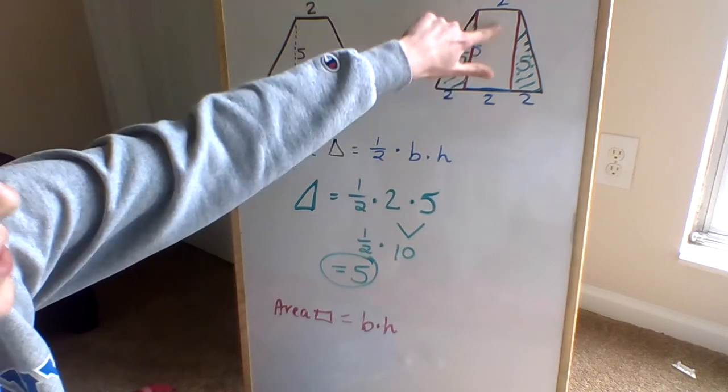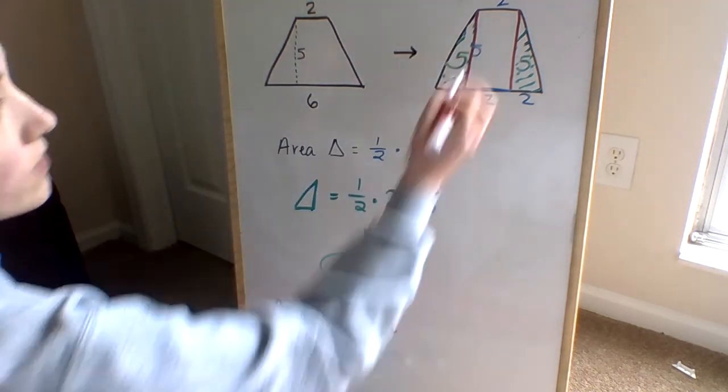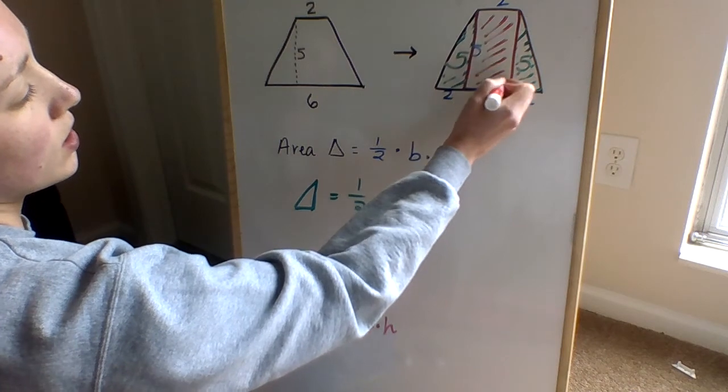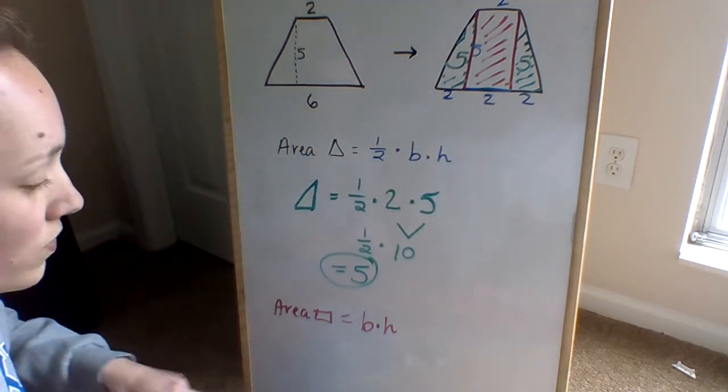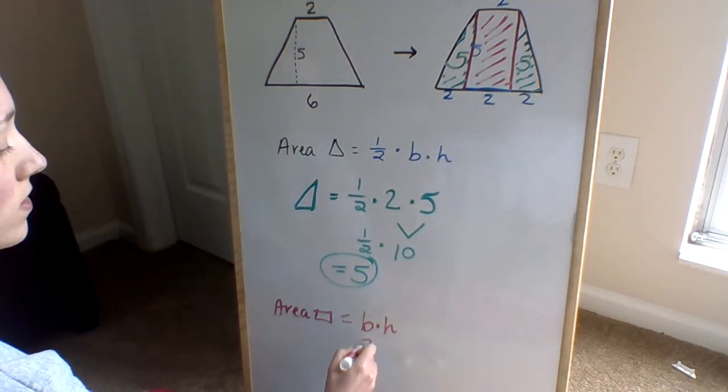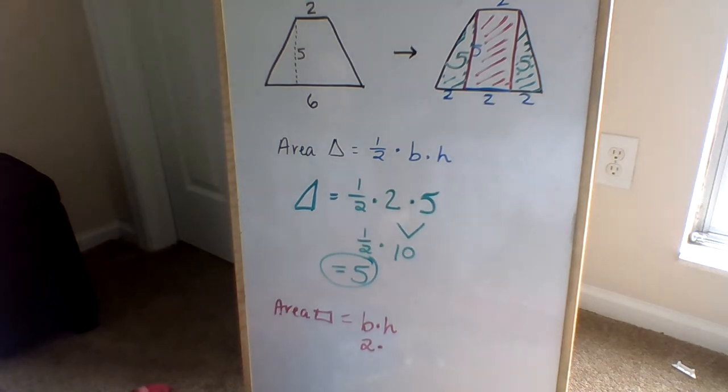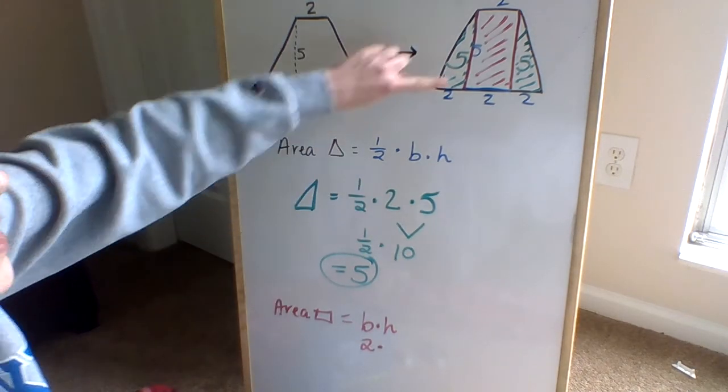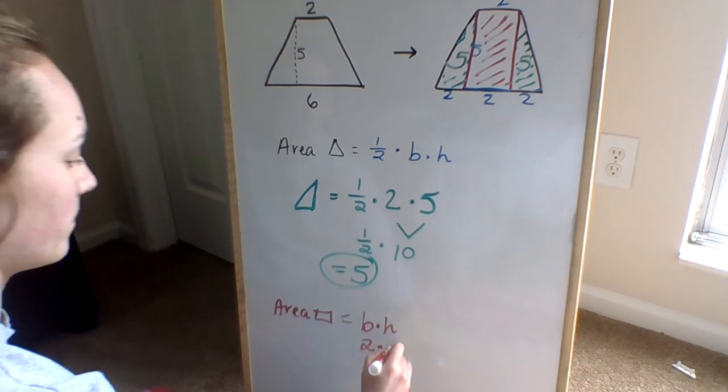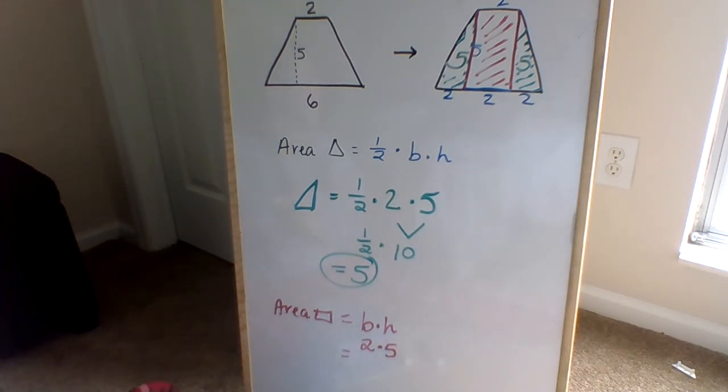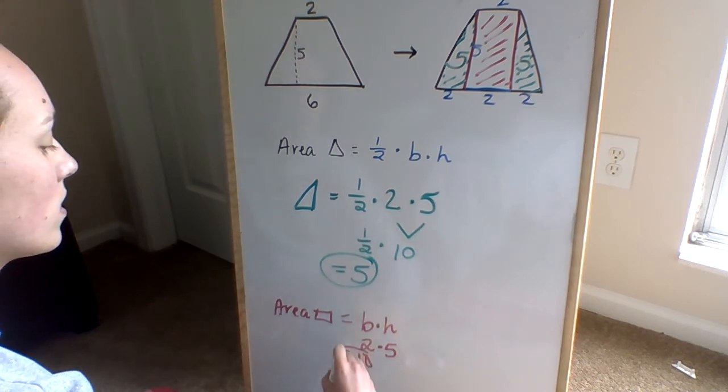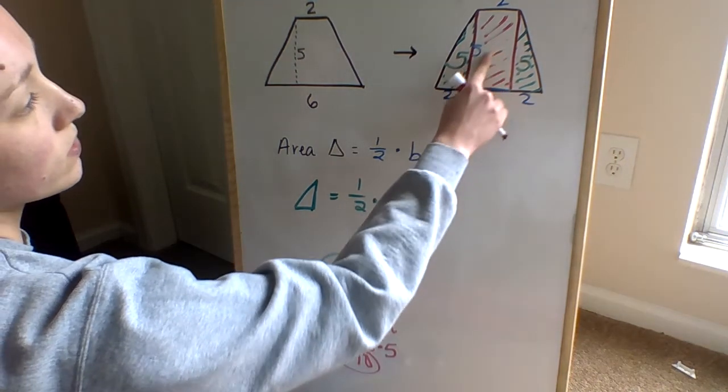For our rectangle up here, we'll shade it in red. Then, what is the base of the rectangle? Good, it's two. So we're going to plug in two for base. What is the height of our rectangle? Good, it is five. So, what is two times five? Good, it is ten. So the area of our rectangle is ten.